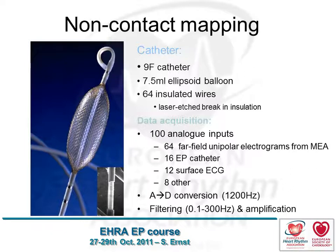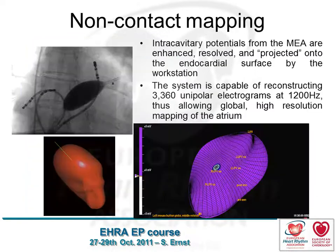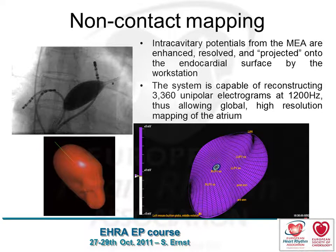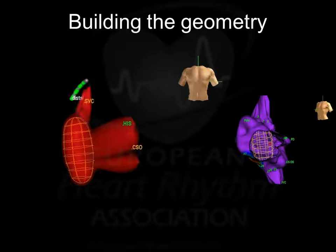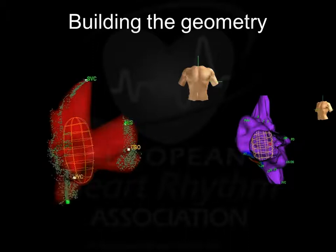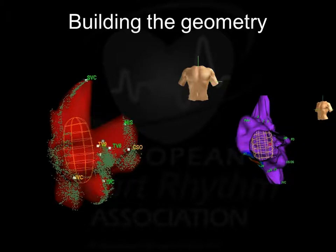This is the non-contact mapping system — I think Richard is far more experienced with it; I've done a total of four cases in my life with it. It consists essentially of a wire balloon with very small electrodes off those wires. By using a sophisticated mathematical formula called an inverse solution, it projects the recorded electrograms from that basket onto a 3D contour that you acquire by moving the catheter around. You put the basket array in the given chamber you want to map, move your mapping catheter around to create the geometry, and after that you acquire the activation, which is displayed over the surface you've created.